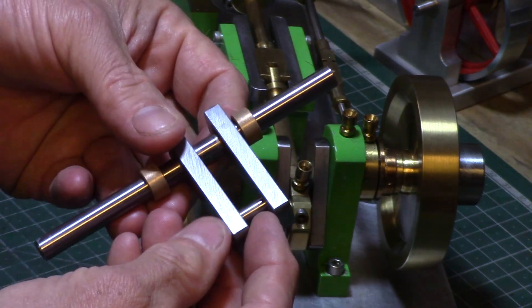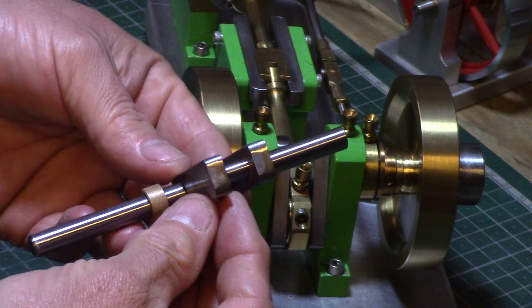The same is done for the journal pin and then the excess part of the axle removed to create the crank.